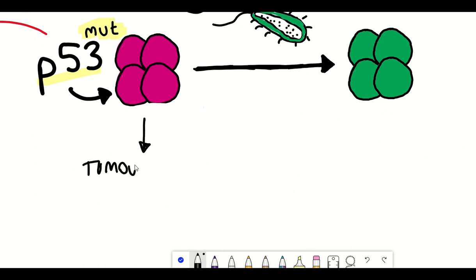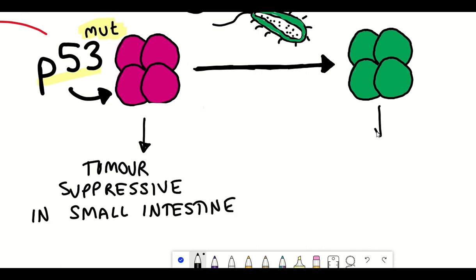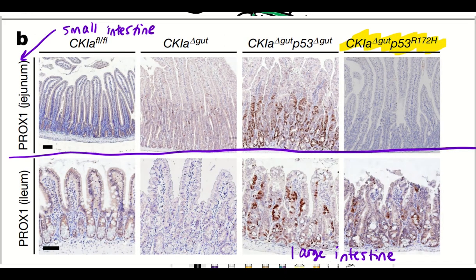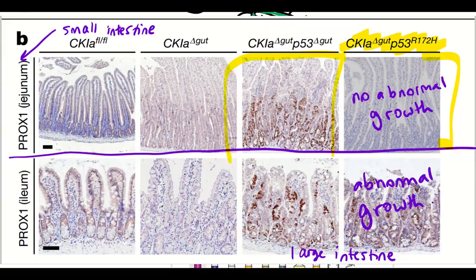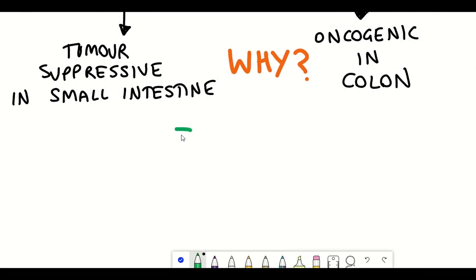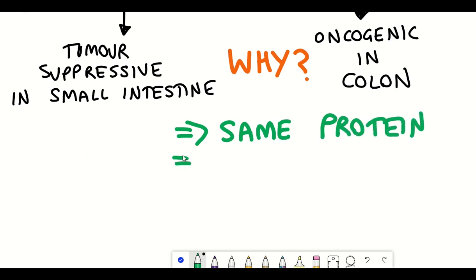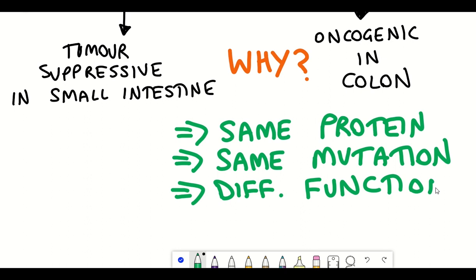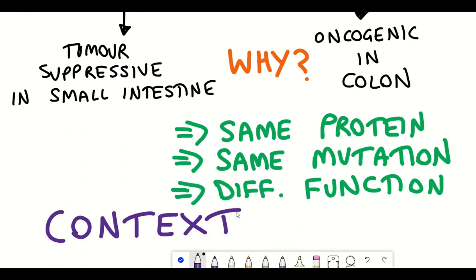They found that mutant p53 enhanced tumorigenesis in the distal gut — the colon — but it actually counteracted tumorigenesis and showed tumour suppressive functions like the wild type p53 protein in the proximal gut, meaning regions of the small intestine. This is really astounding: the same protein with the same mutation having different functions in different regions of the intestine, which strongly reinforces the context dependency of different mutations.